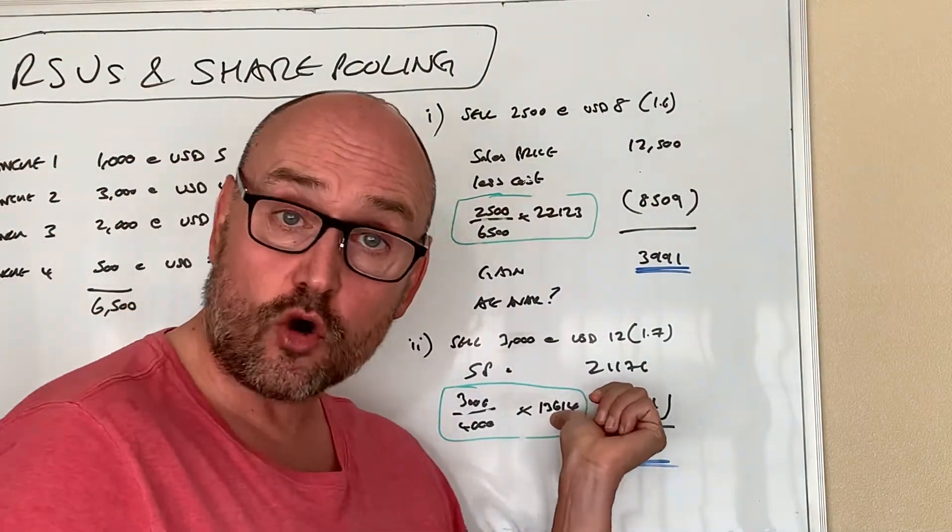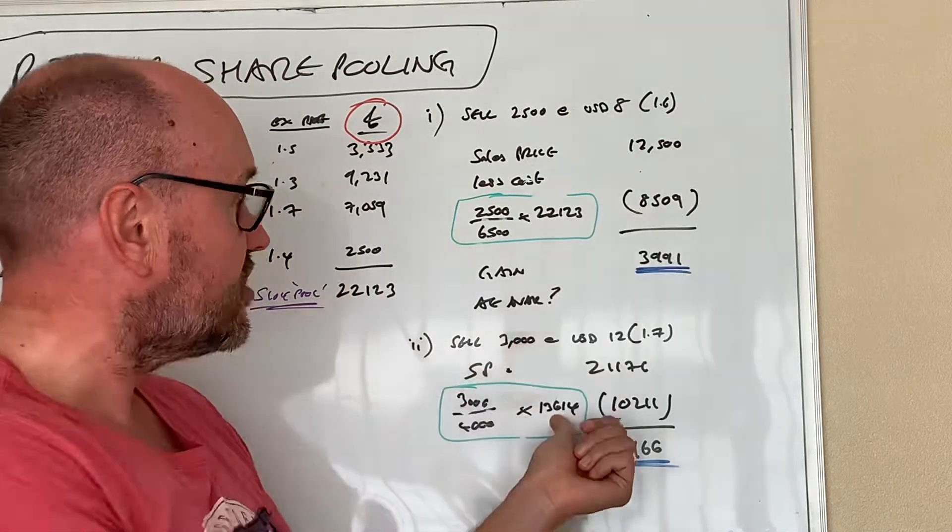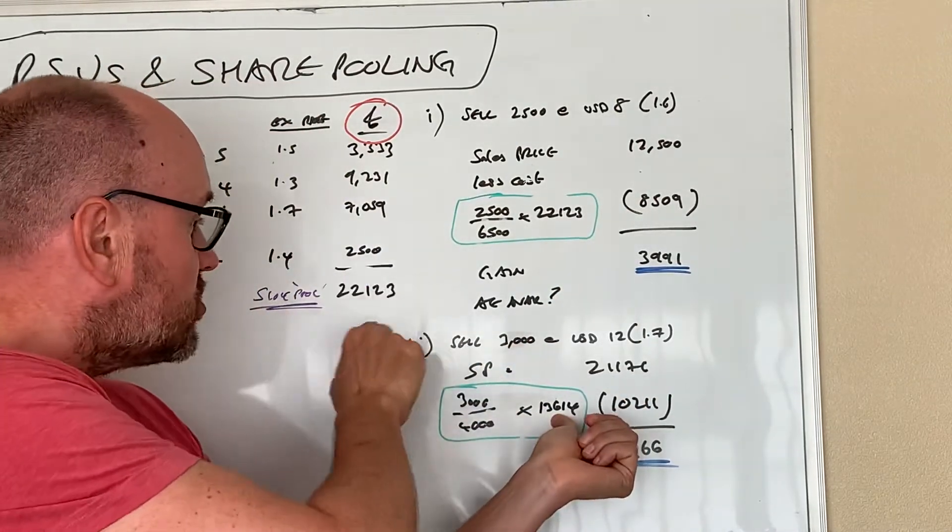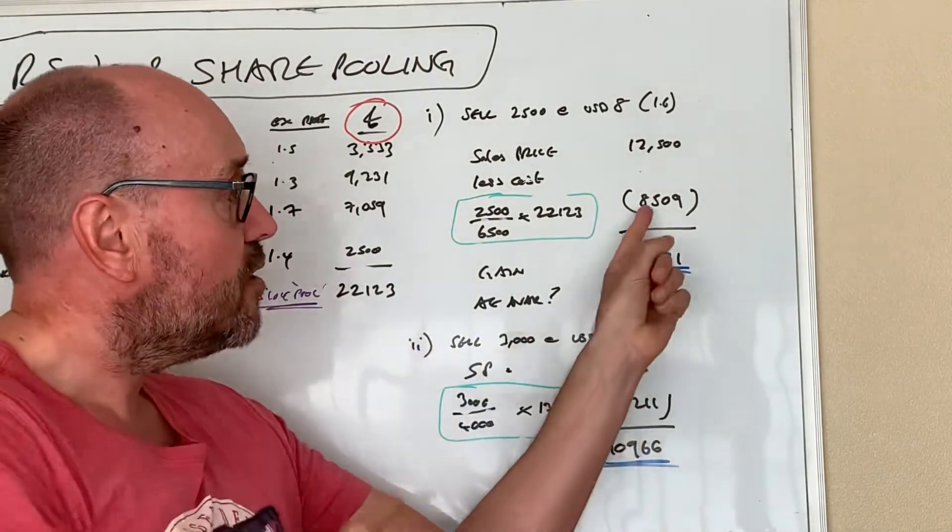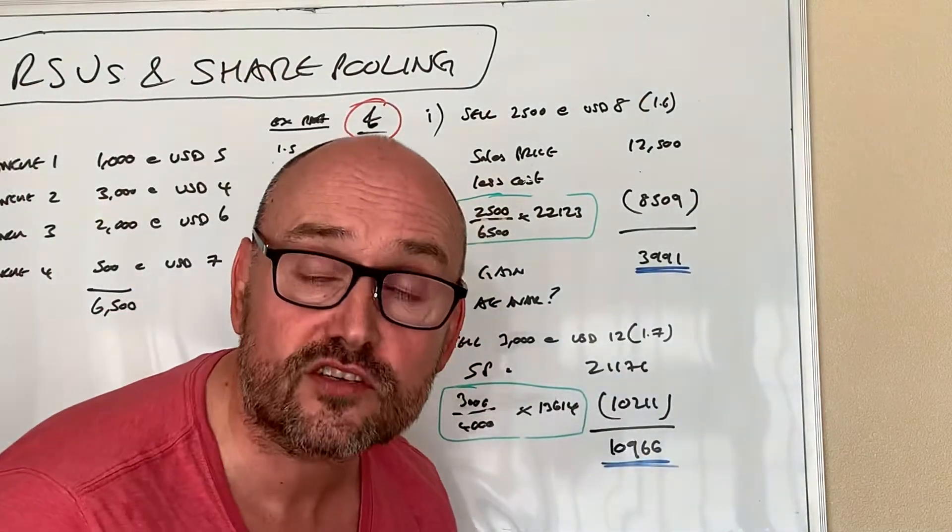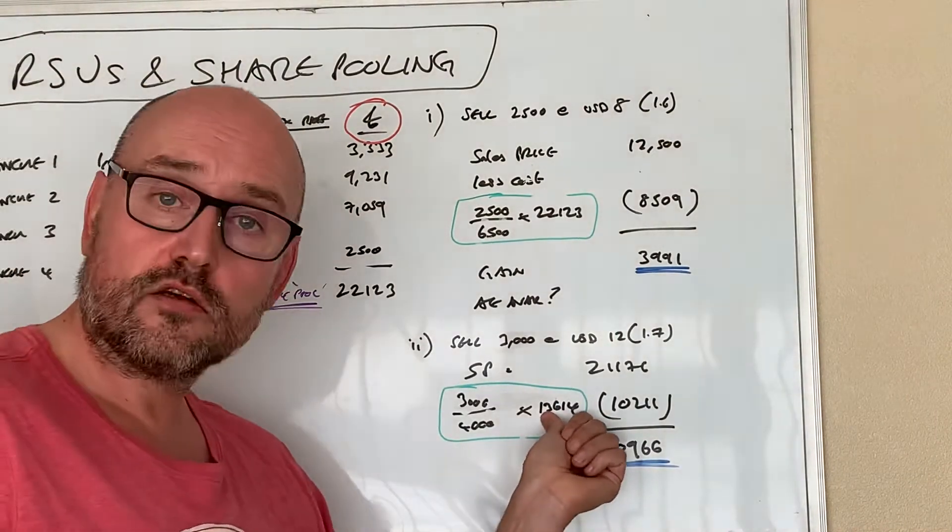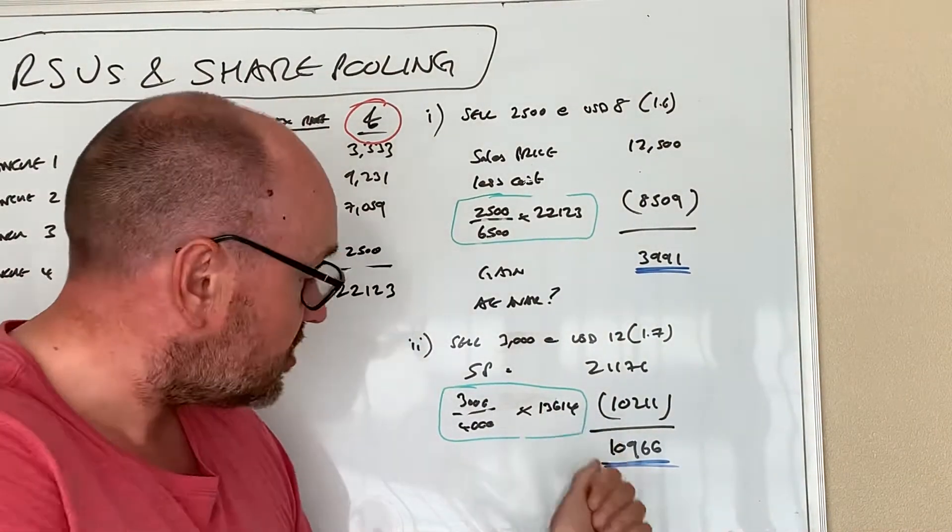He's basically getting rid of three quarters of what he's got left, three thousand over four thousand. And then this figure changes as well. This is your pool carried forward after you've got rid of this. Your pool cost started at twenty-two grand, but we're saying eight and a half of that was already accounted for in the previous sale.